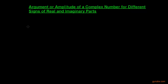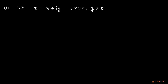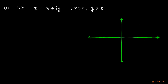Suppose we are given a complex number z = x + iy, where x is positive and y is also positive. If we want to represent this complex number in the Argand plane, we can represent it like this. Suppose this is the point P which represents the complex number — x is the real part and y is the imaginary part.